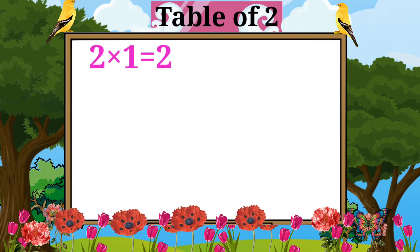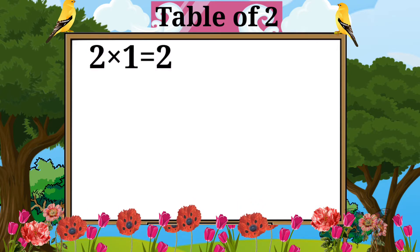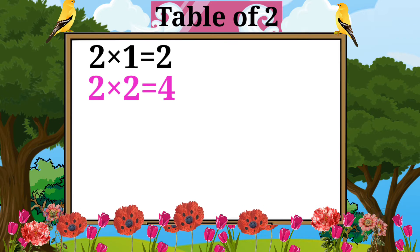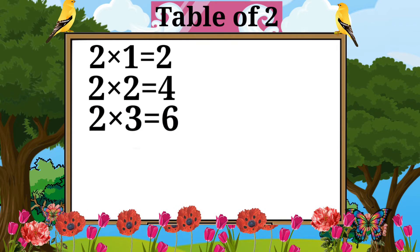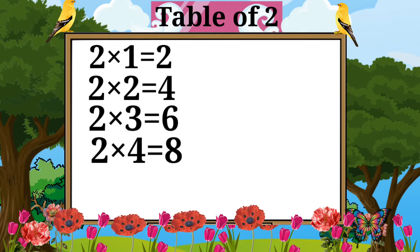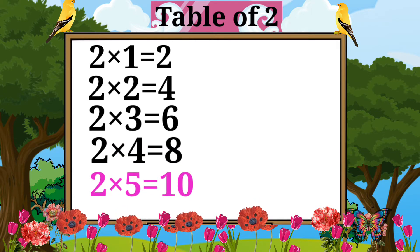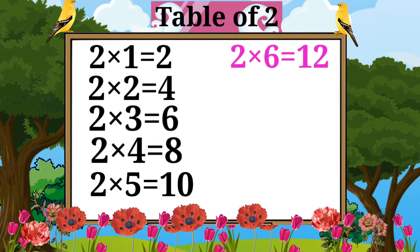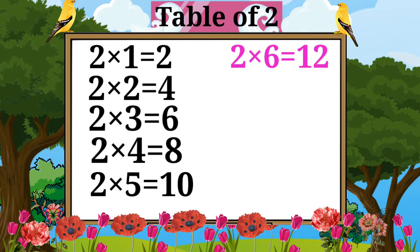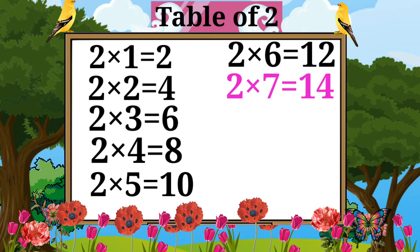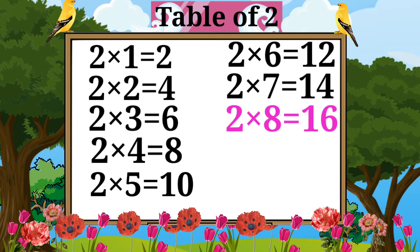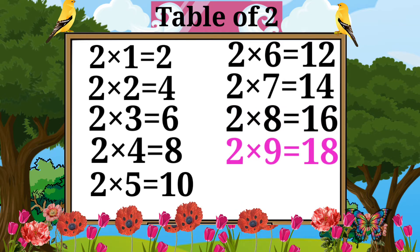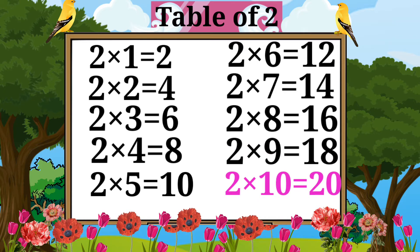Two ones are two. Two twos are four. Two threes are six. Two fours are eight. Two fives are ten. Two sixes are twelve. Two sevens are fourteen. Two eights are sixteen. Two nines are eighteen. Two tens are twenty.